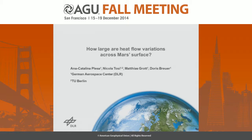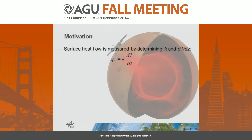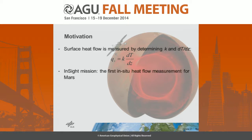The surface heat flow is the quantity that tells us how a planet loses its heat. We can calculate this by determining the thermal conductivity and the temperature gradient — it's basically the equation you see above.